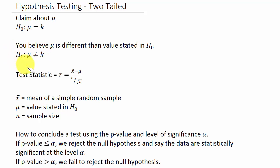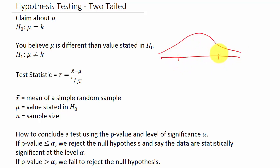That means it could either be higher or lower. Because it's a two-tail test, we're looking at both tails — here and here. This area plus this area would be our P-value when we calculate it.